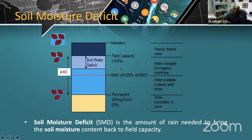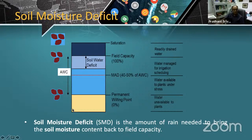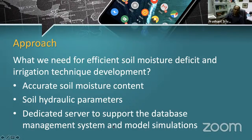To develop an efficient soil moisture deficit and irrigation technique, we need three things: first, accurate soil moisture content; second, soil hydraulic parameters like field capacity and permanent wilting point; and third, a dedicated server available 24/7 to support the database management system and model simulation so we can release forecasts on an hourly, weekly, or monthly basis.